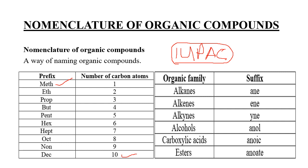The suffix comes from the homologous family: alkanes end in '-ane', alkenes end in '-ene', alkynes end in '-yne', alcohols end in '-anol', carboxylic acids end in '-anoic', and esters end in '-anoate'. So you combine the prefix with the suffix to name any organic compound.